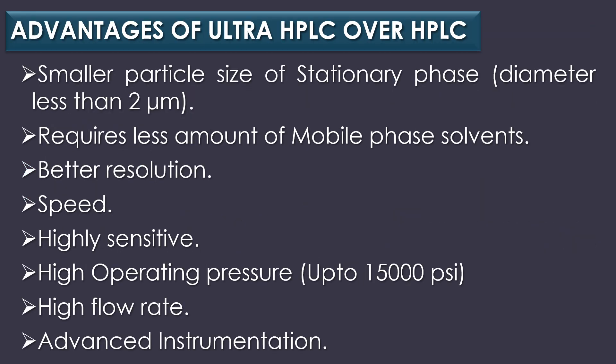Advantages of ultra HPLC over HPLC include smaller particle size of stationary phase with diameter less than 2 micrometers, requires less amount of mobile phase solvents, better resolution, speed, highly sensitive, high operating pressure up to 15,000 PSI, high flow rate, and advanced instrumentation.